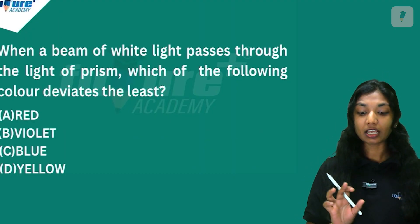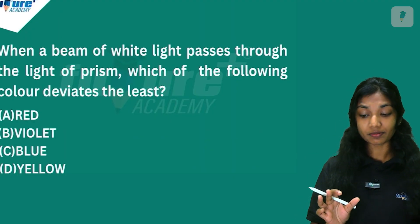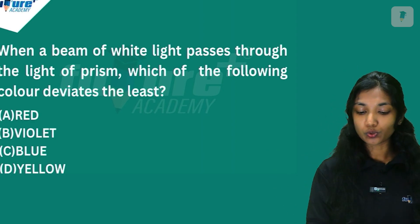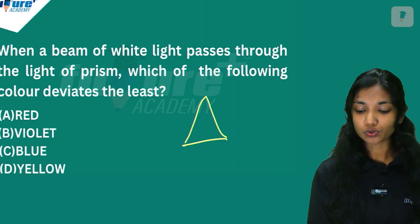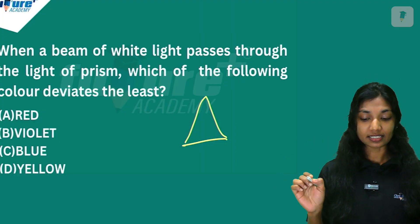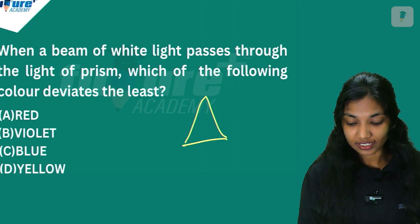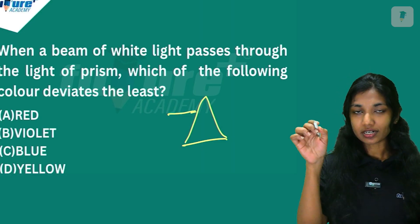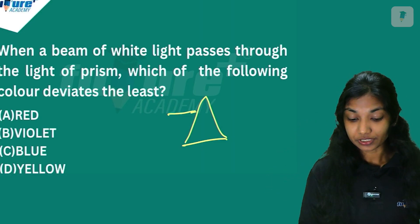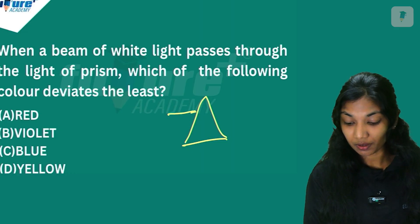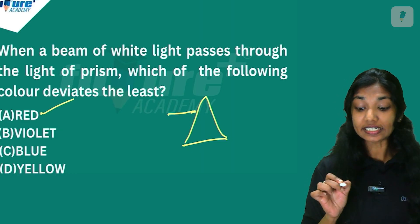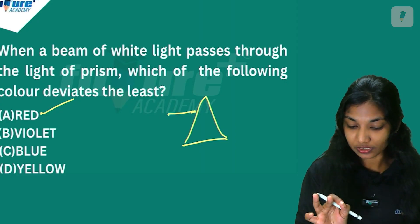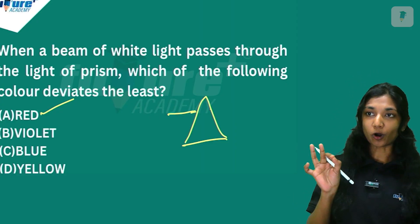Next question: When a beam of white light passes through a prism, which of the following colors deviates the least? The answer is Option A — the least deviated color when white light passes through a prism.